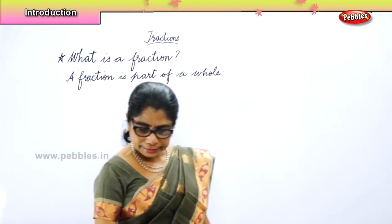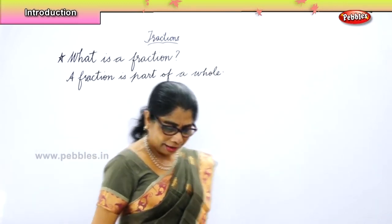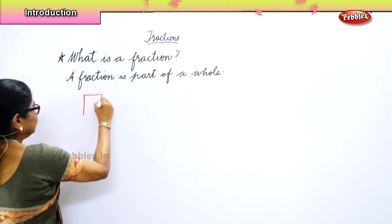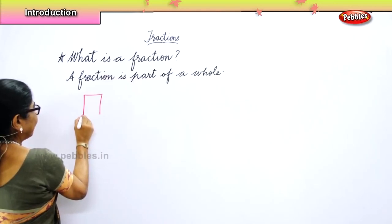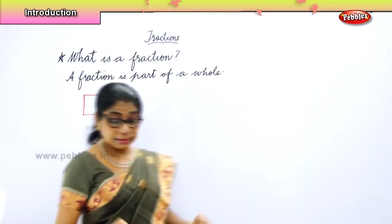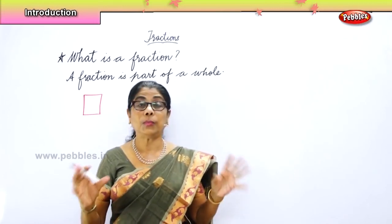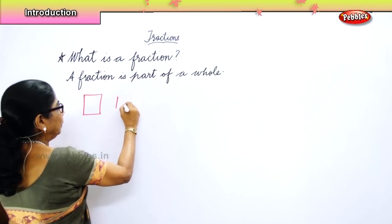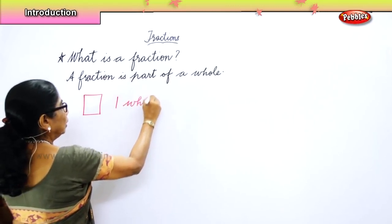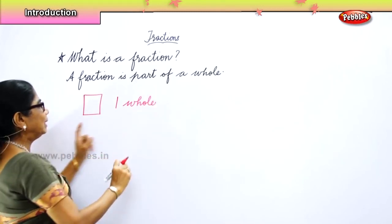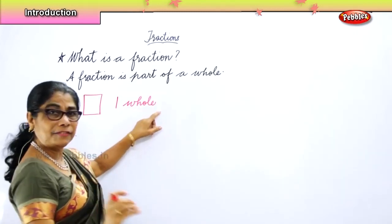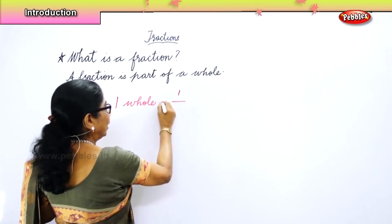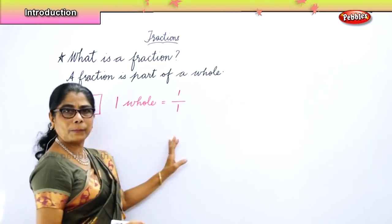For example, if you have a square cake, one part out of one — we call this one whole. And we can represent this as a fraction: that is one out of one, one by one.